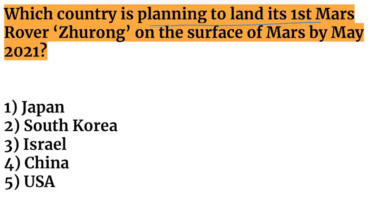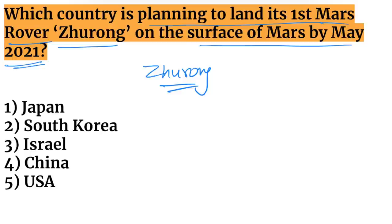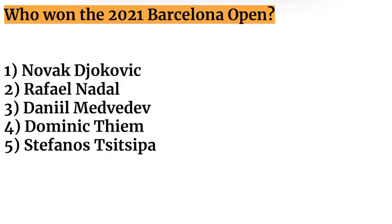Next question: which country is planning to land its first Mars rover, Zhurong, on the surface of Mars by May 2021? Zhurong is a rover belonging to China, and it was planned to be landed on the surface of Mars in May 2021.